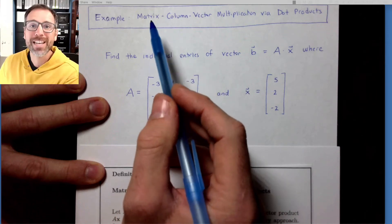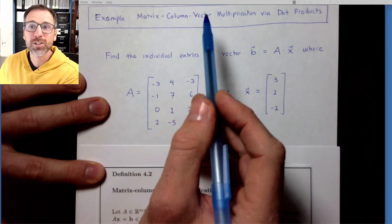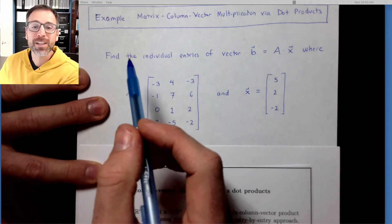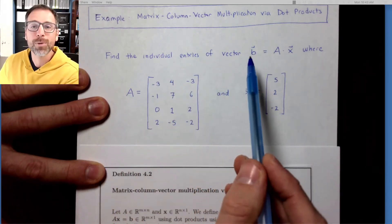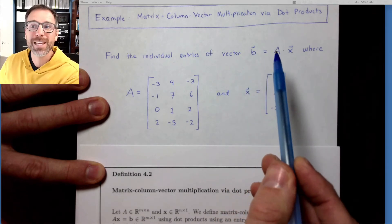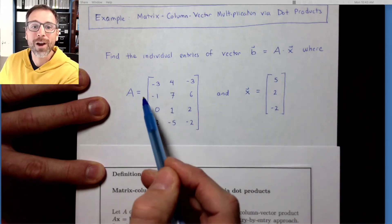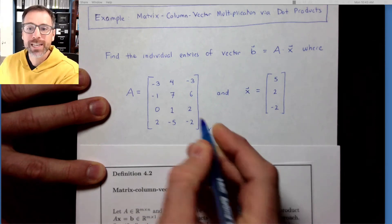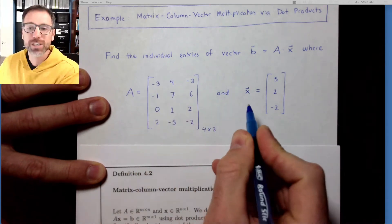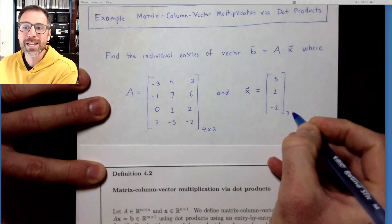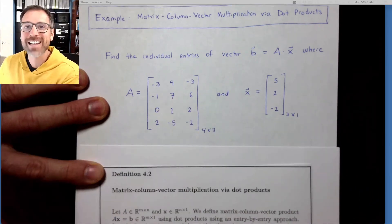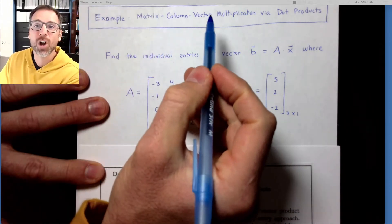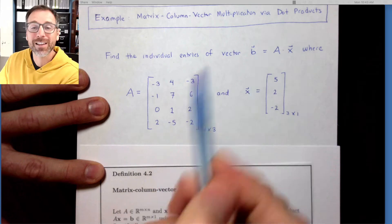Let's build our intuition about the definition of matrix column vector multiplication via dot products by looking at a concrete example. Specifically, we'll find the individual entries of the output vector B, which is going to be matrix A multiplied by X, where A is a 4 by 3 matrix with integer coefficients, and X is a 3 by 1 vector. You might recognize these as the exact same data we used to explore the matrix column vector multiplication definition via linear combinations.